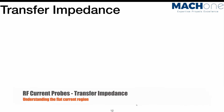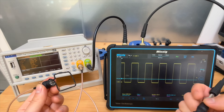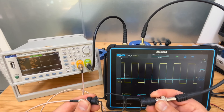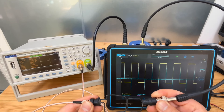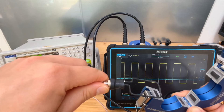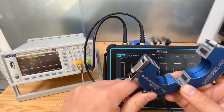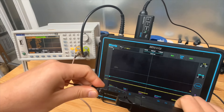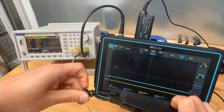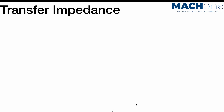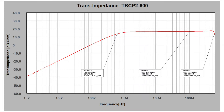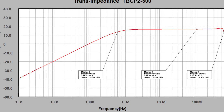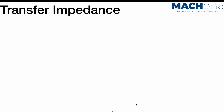Hello everyone. In the last episode we showed you a few methods of measuring RF signals using a near-field probe, an RF current probe, and a Hall-effect sensor probe, and we threw you the question: which waveforms do we trust? So in this episode we're going to look at the system diagram of these measurement tools and explain a very important concept — the transfer impedance.